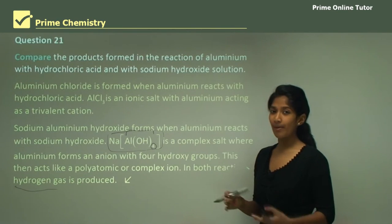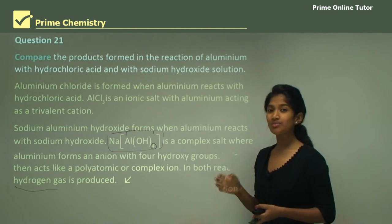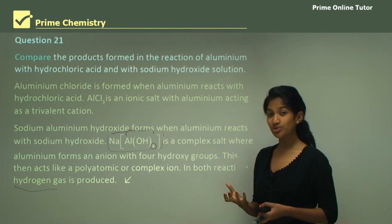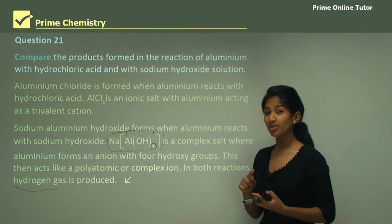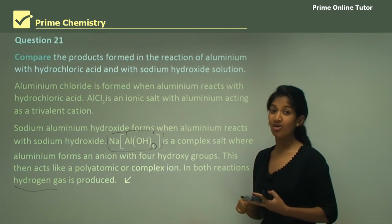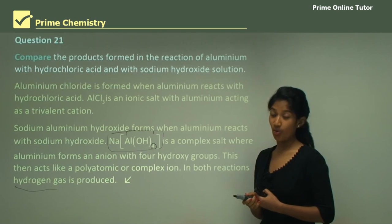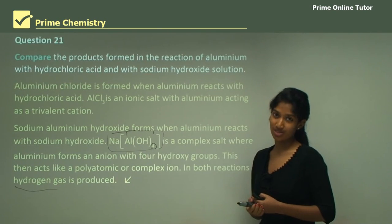To wrap up, we learned about metals that react with both acids and alkalis, and that these metals are called amphoteric substances.